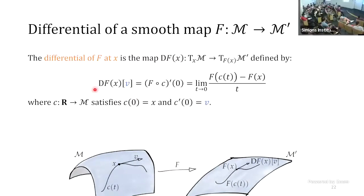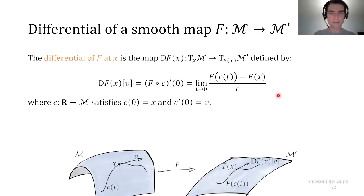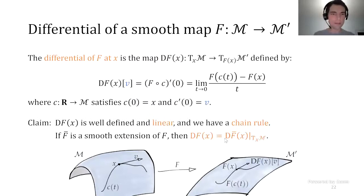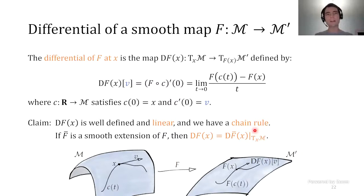If V is a tangent vector at X, then by definition of tangent vectors there exists a smooth curve C(t) passing through X with velocity V, lying entirely on M. I can compose it with F and get F(C(t)), which is a smooth curve on M'. Since the curve is smooth, the map F is smooth, and composition preserves smoothness, F(C(t)) is smooth and passes through F(X). The velocity of that curve is what we define as the differential of F at X along V—written DF(X)[V]. Importantly, this does not depend on the choice of curve, and the operator DF(X) is linear. You also have a chain rule.